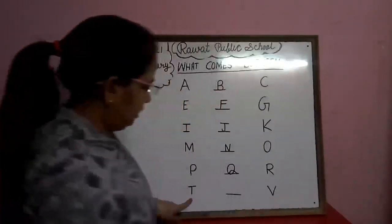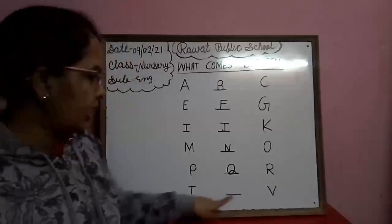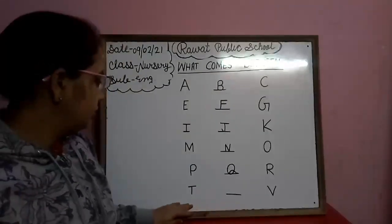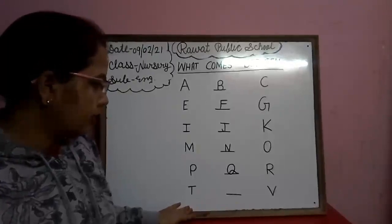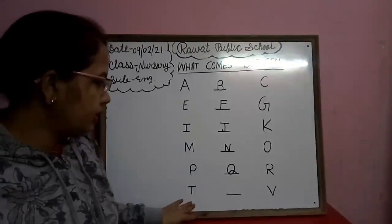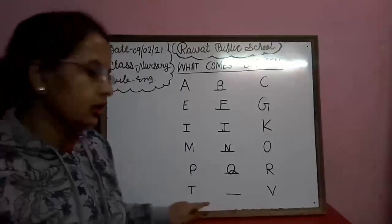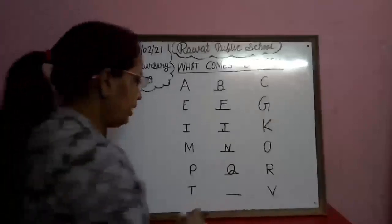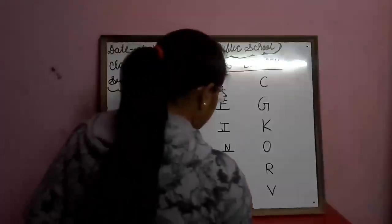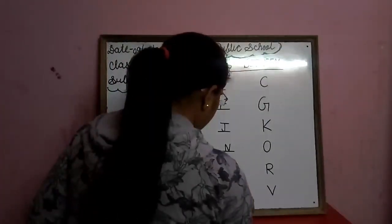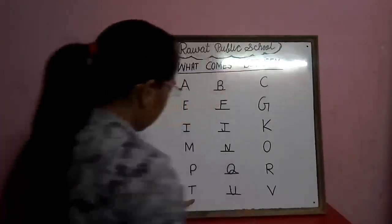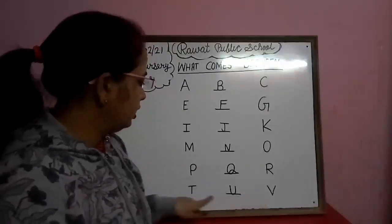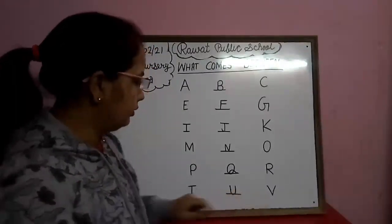This is T and this is V. What comes between T and V? U. So we will write here U. T, U, V.